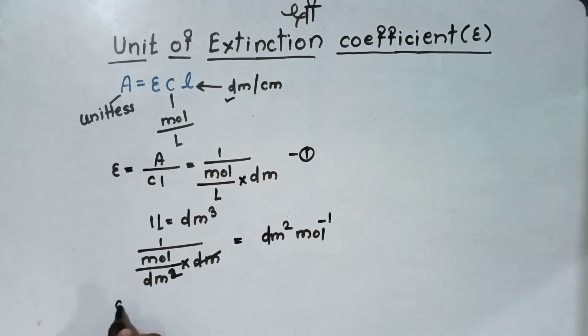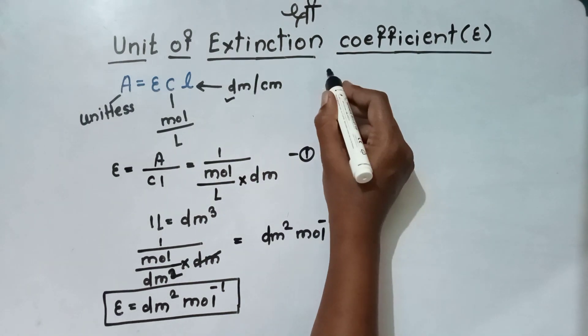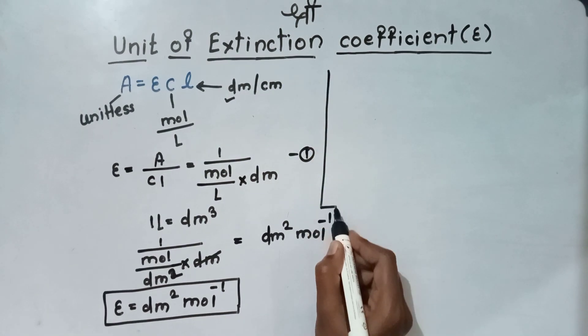Then, unit of epsilon becomes decimeter square mole raised to minus 1 when length is in the form of decimeter. Then, we will see when length is in the form of centimeter.